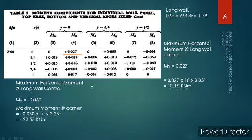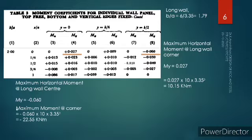For the maximum horizontal moment at the long wall center, we look at y = b/2. The highest coefficient found is 0.060. Applying the formula My = 0.060 × 10 × 3.35³, we get the moment of 22.55 kNm.